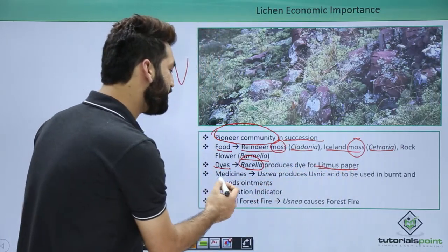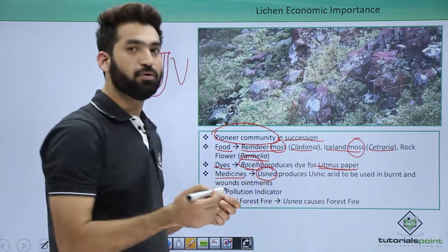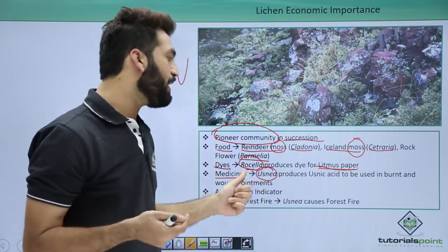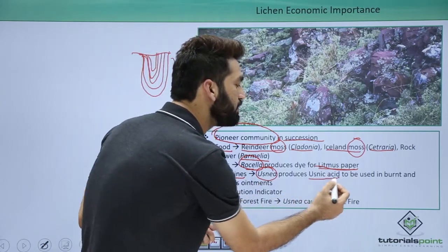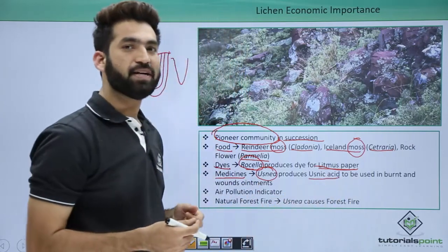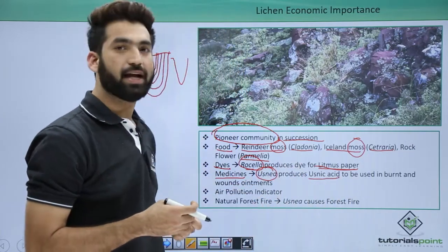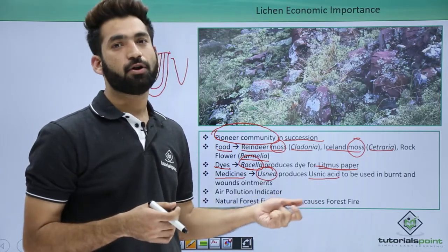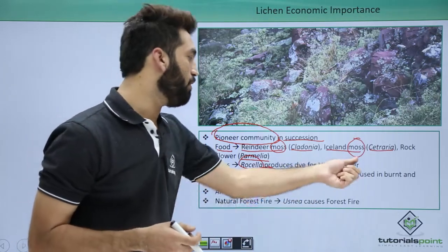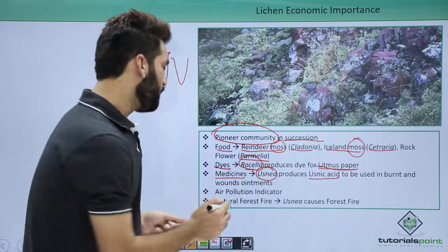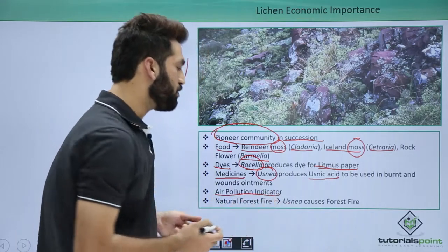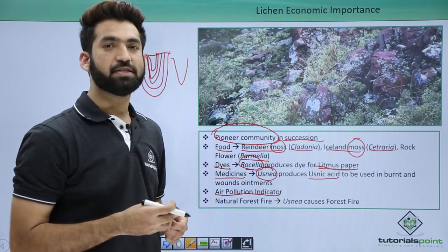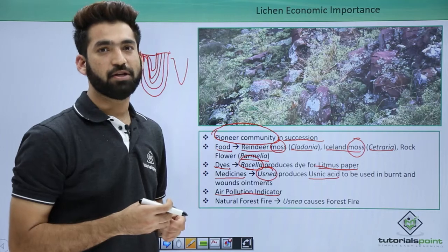Regarding medicinal uses, Usnea — also called old man's beard — produces a particular substance called usnic acid. Usnic acid is used as an ointment for burns and wounds.